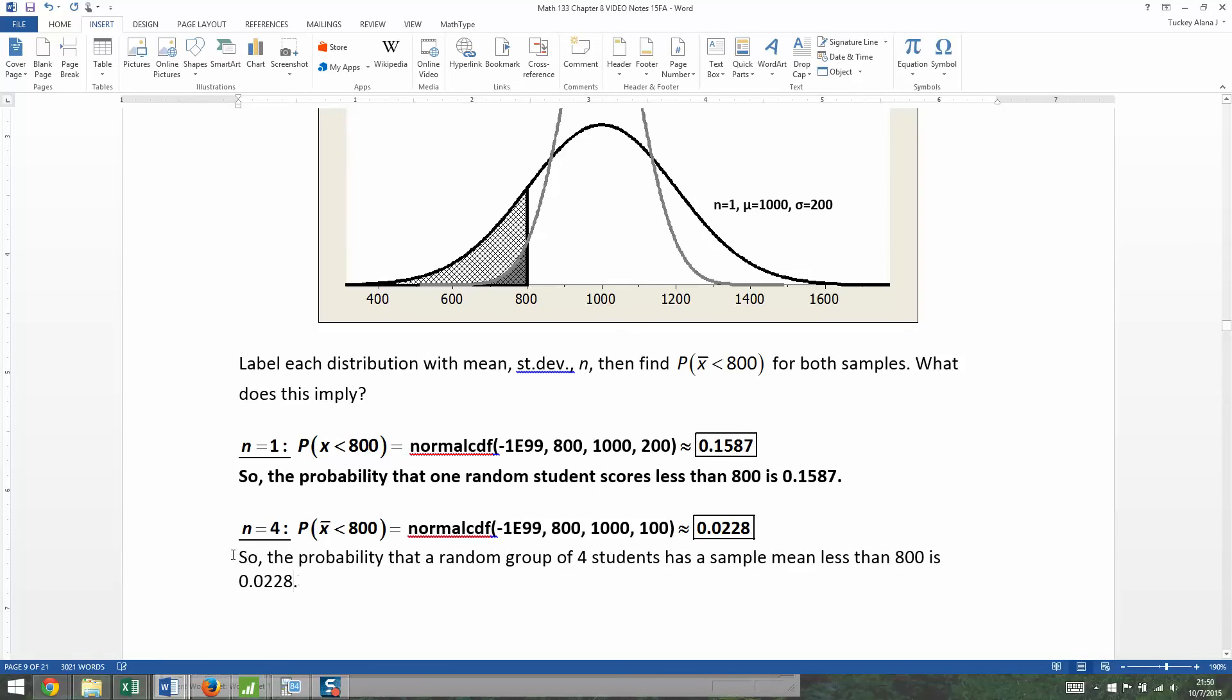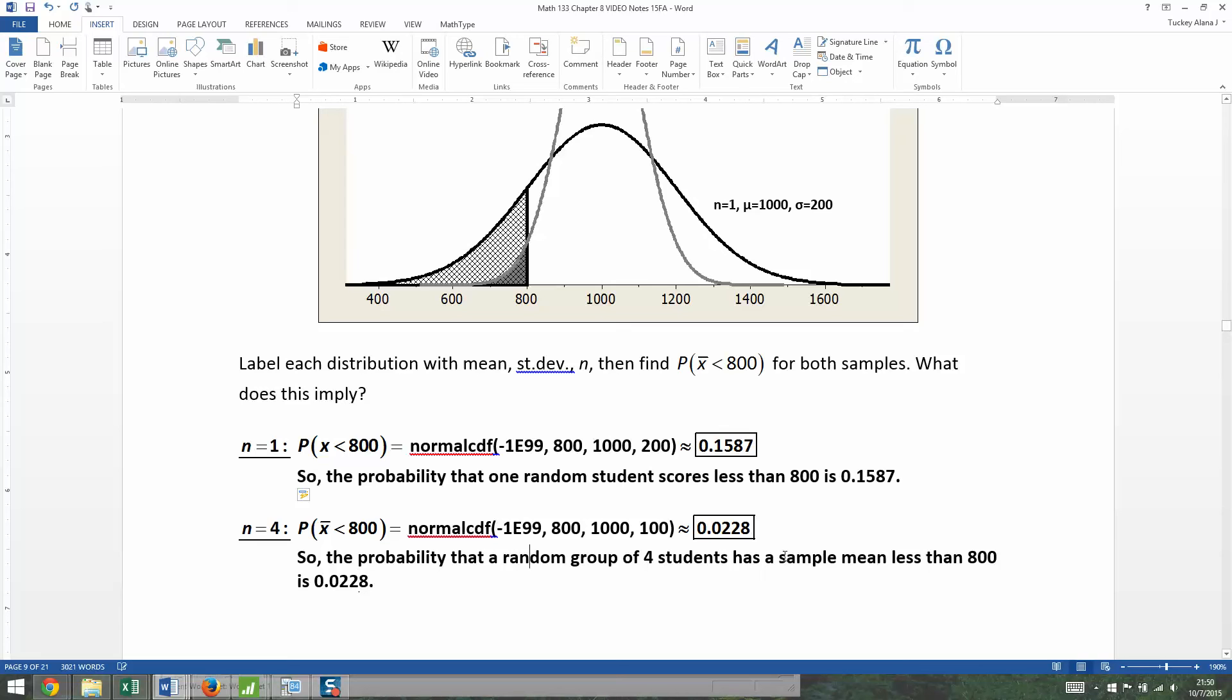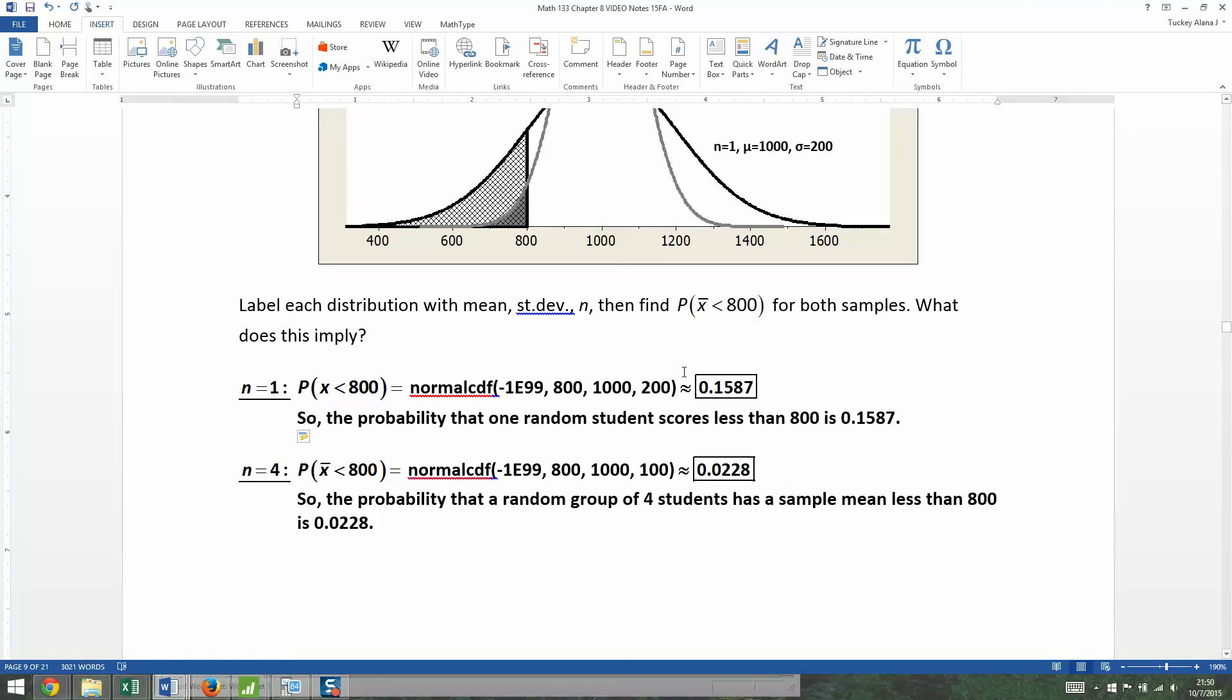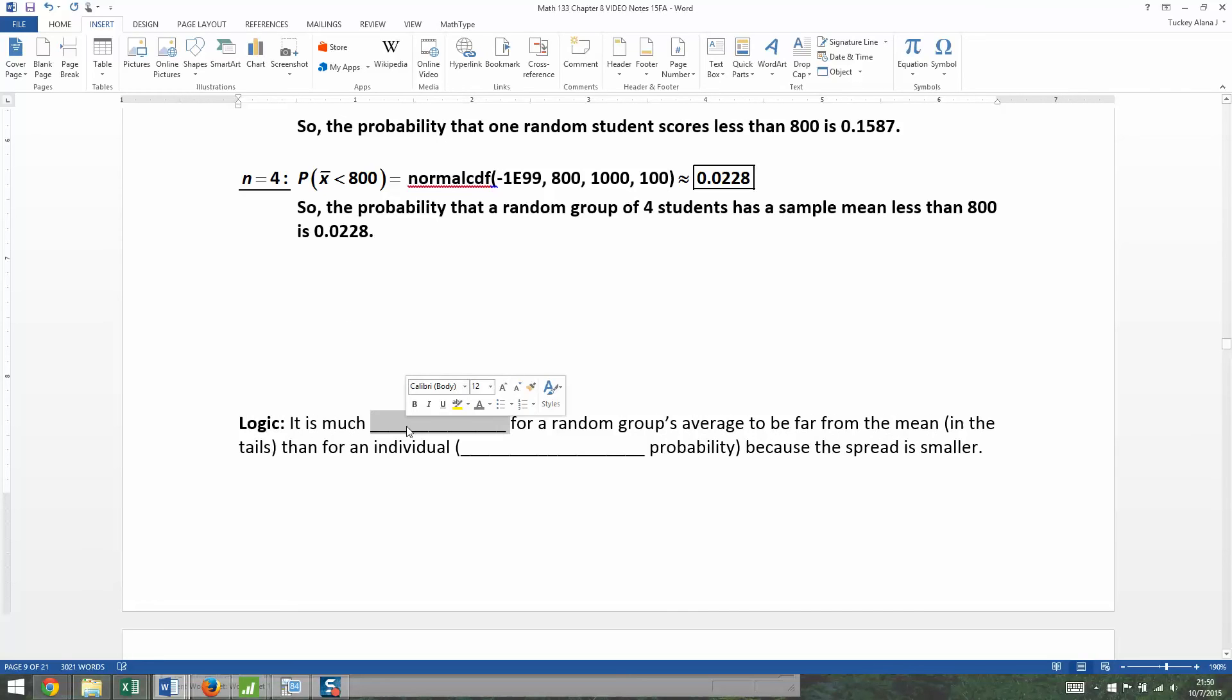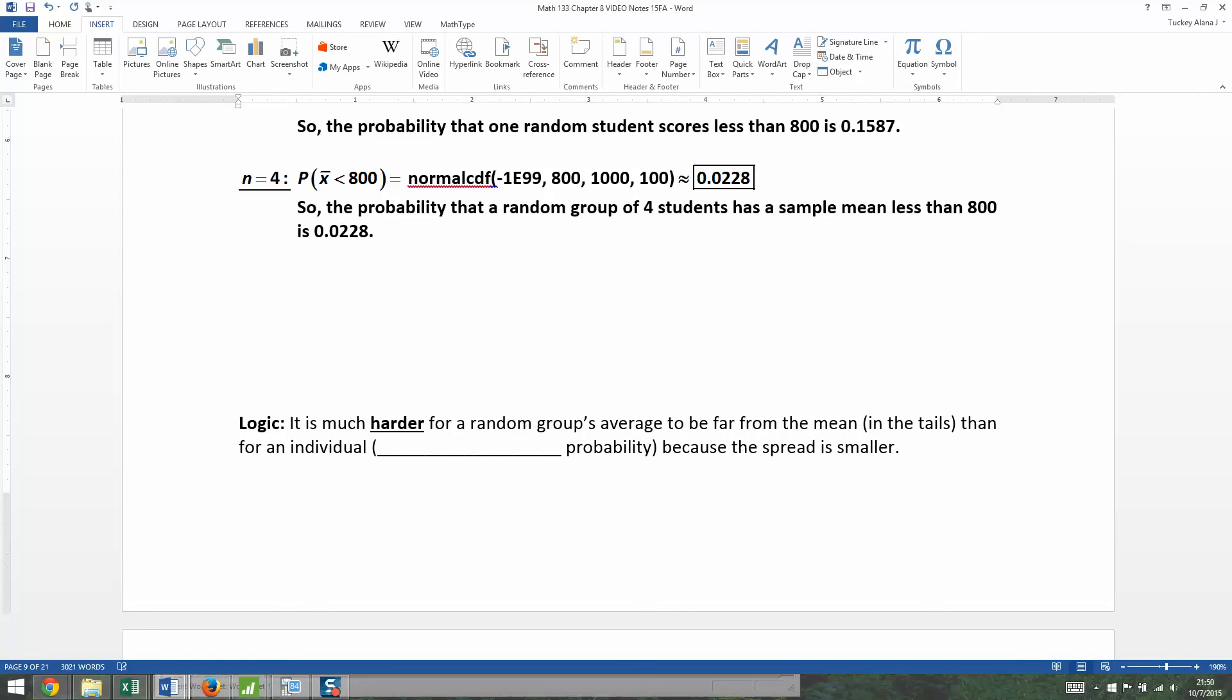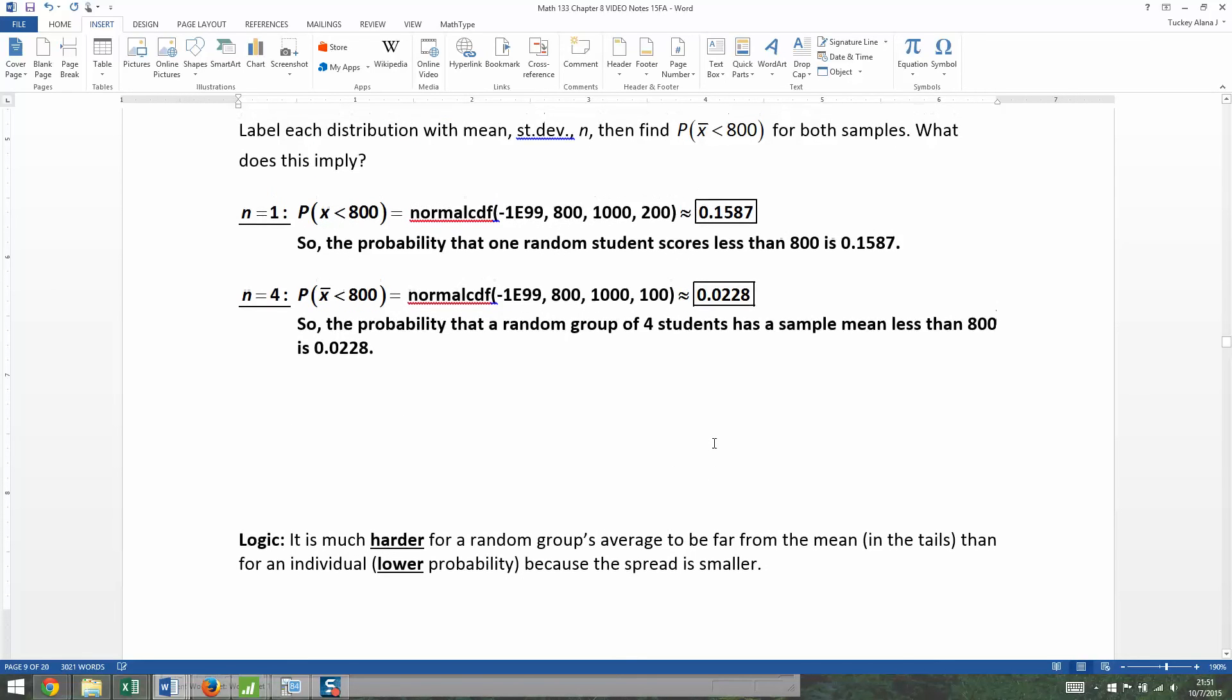That's very different than the other one, right? Because the other one's talking about a single student scoring low. But this is talking about a group of four random people having an average that's low. That's much harder to come by. You can get one student scoring lower than 800, sure, it happens 15% of the time. But having four random people score that low on average, that doesn't happen so often. It is much harder for a random group's average to be far from the mean. In other words, it would have a lower probability. Because your spread is smaller. So it's hard to be off on the tail when you have a smaller spread. These four people, because they're random, they're going to balance each other out. You're not going to get all four of them to be low like that very often.